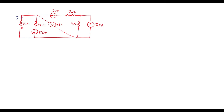Let I be the current which flows through the 12 ohm resistor. Here we can see that there is a 30 amp current source in parallel with a 4 ohm resistor. We can convert this current source into a voltage source by applying source transformation. By doing that, this voltage source will come in series, and these two resistors will also be in series, so we can easily reduce the network further.